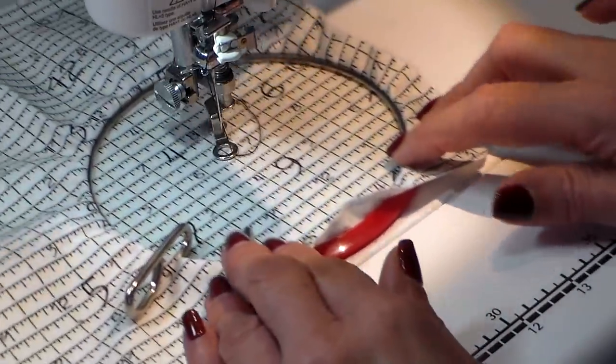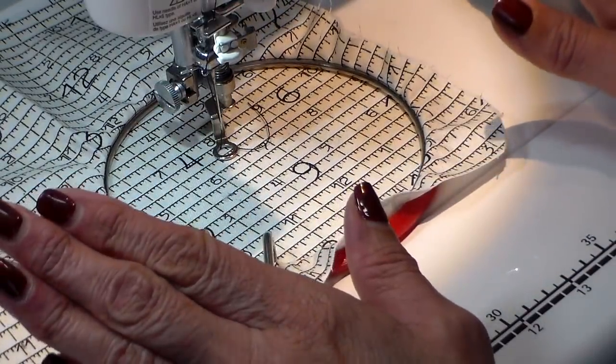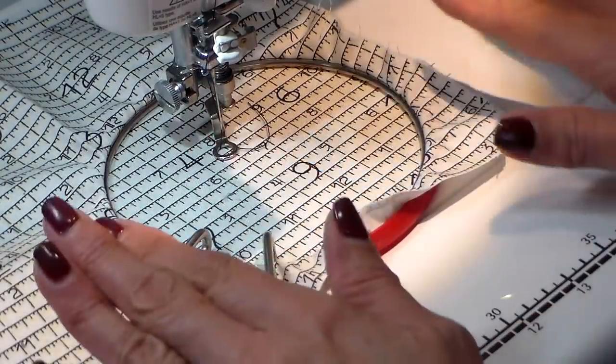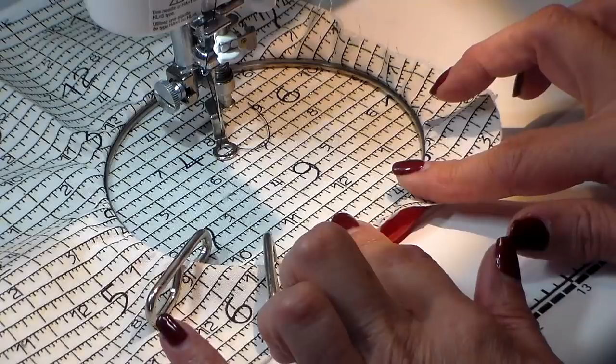I'm going to be doing these circles. Some are going to be small, some are going to be big. There's going to be times when I'm just going to have to stop and think of what I'm doing because I don't have any design on here. I'm just going to be free doing this. I will have to be moving my hoop also.